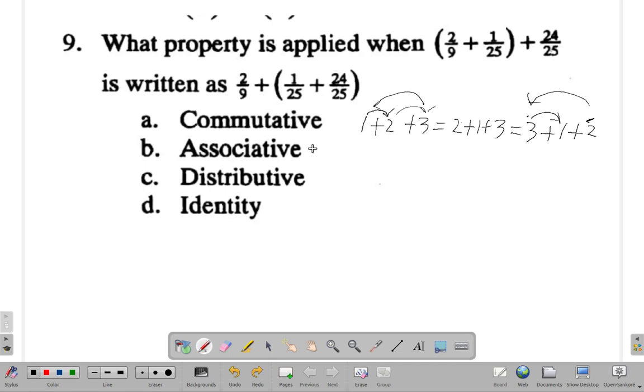Here it is associative because each item, each number, remains in its position. You have a bracket around it. Two-ninths plus one and one-twenty-fifth associate with each other within this bracket. You change the association, so one-twenty-fifth and twenty-four twenty-fifths are associated with each other within this bracket. Associative.